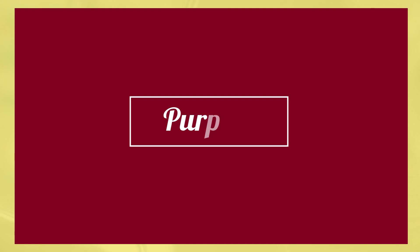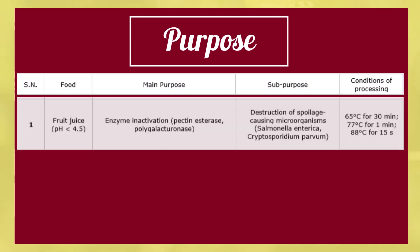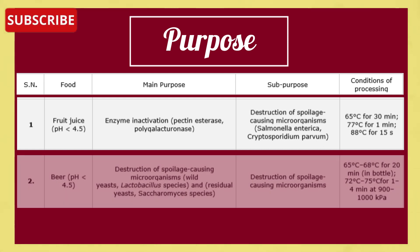The first product is fruit juice. The main purpose is to inactivate enzymes such as pectinesterase and polygalacturonase, which also causes the destruction of spoilage-causing microorganisms. Conditions of processing are 65°C for 30 minutes, 77°C for one minute, or 88°C for 15 seconds.